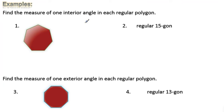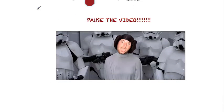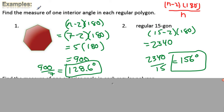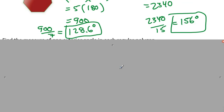Let's look at some examples — find the measure of one interior angle. This has seven sides — it's a heptagon. So you plug in: (N-2) times 180, seven minus two is five, you get 900. We're asking for one interior angle, so divide by seven. You get 128.6 — round to the nearest tenth if asked. How about a 15-gon? That has 15 sides. Plug it in: 13 times 180, you get 2340. Divide by 15, you get 156. Or you can just use the formula (N-2) times 180 all over N and it gives you the answer in one step.